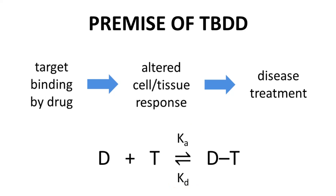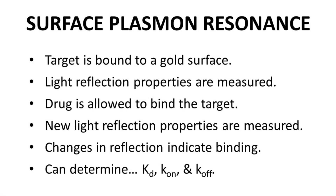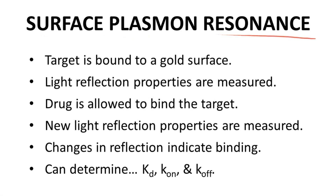Two different common binding assays can determine KD values for a drug-target pair. One binding assay method is surface plasmon resonance, or SPR.